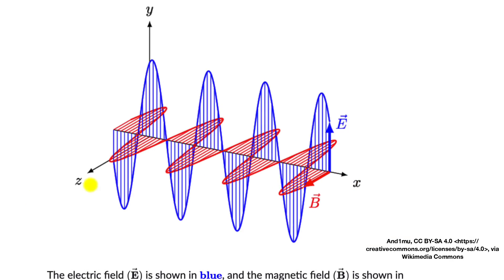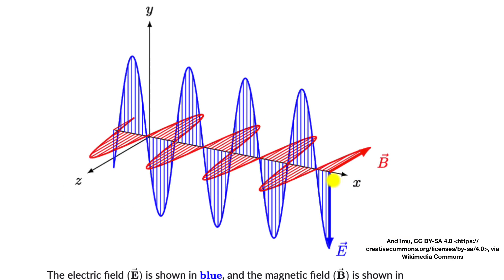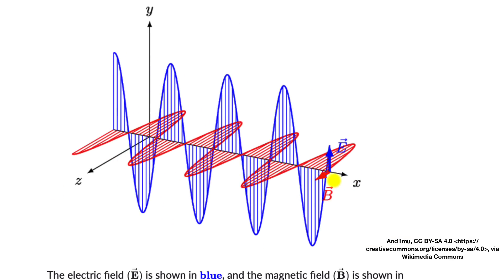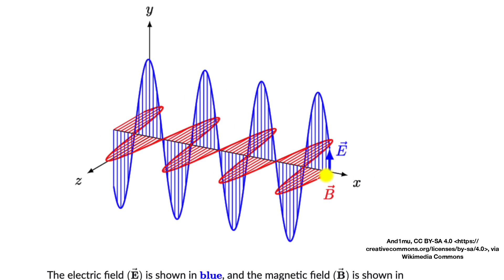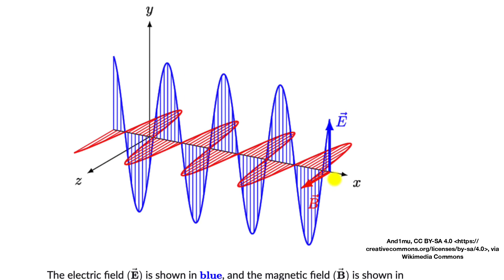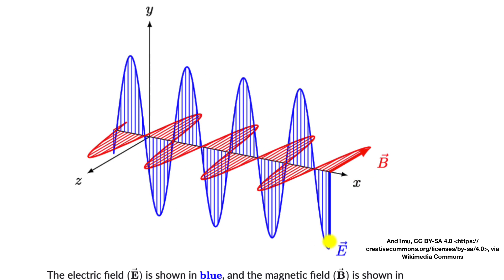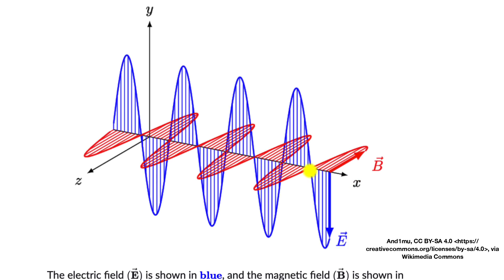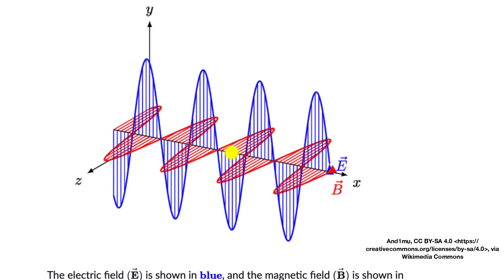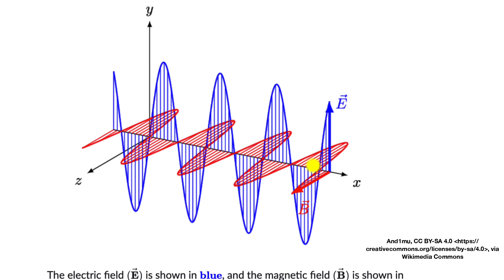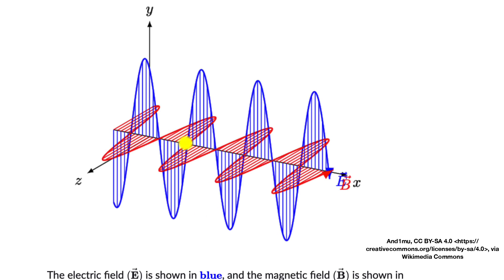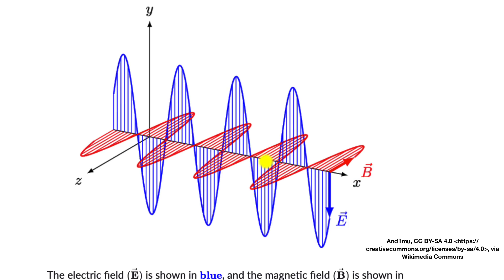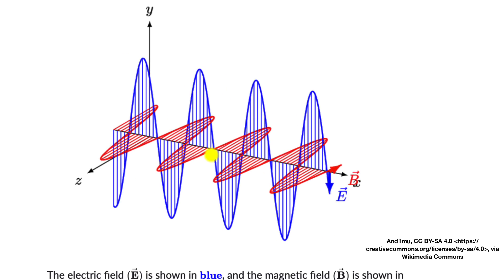Electromagnetic waves consist of oscillating electric and magnetic fields. A changing electric field produces a changing magnetic field, which produces a changing electric field, and so on and so forth. As you can see in this animation, the disturbance gets propagated — and the beautiful thing is that this disturbance can propagate in vacuum; it does not require any medium.